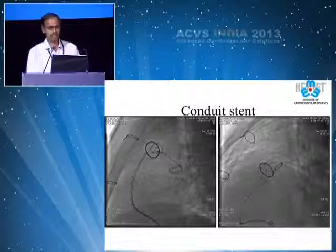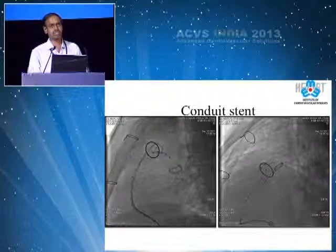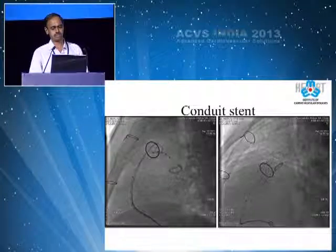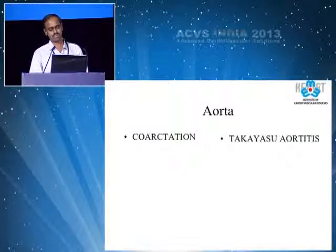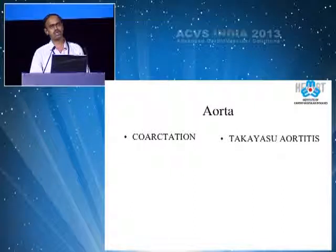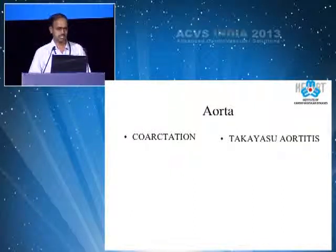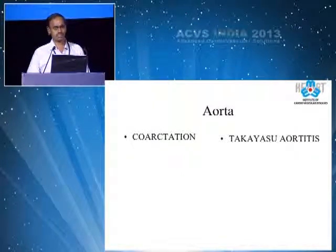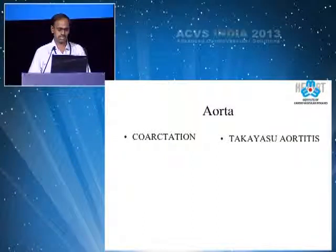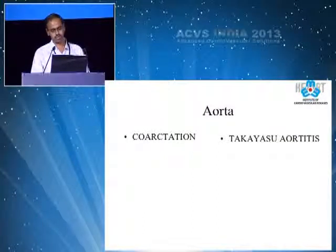Coming to conduit stenting — conduits are used in right ventricle to pulmonary artery connections. Sometimes this is a Hancock conduit, which is commercially available. Another commercially available conduit is Contegra, which is a bovine jugular vein, and in many centers there may be homografts. When these conduits get narrowed, stenting may allow us to postpone the next conduit change and thereby gain a few more years.